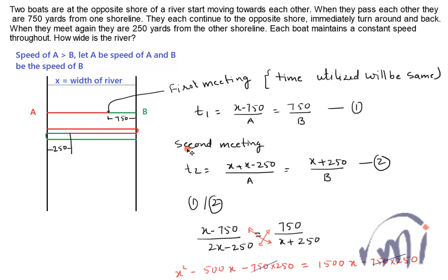At the time of second meeting, the distance covered by A is the complete width of the river plus this much distance, which is x minus 250. So the total time taken by A will be x plus x minus 250 divided by A. The time taken by B will be the distance traveled by B divided by the speed of B. The distance traveled by B is x plus 250 divided by B.